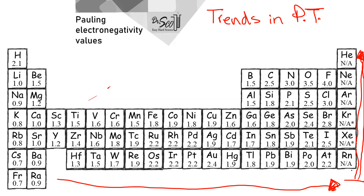Technically, electron affinity is more accurate for this situation. The problem with electron affinity is the measurement is a bit weirder than electronegativity, which is why people tend to like electronegativity. Going horizontally, the size shrinks because the nucleus strengthens faster than the effect of electrons. Going vertically, what you're changing is the primary shell number, which affects the distance from the nucleus very quickly — the shells are gigantic in comparison to subshells.